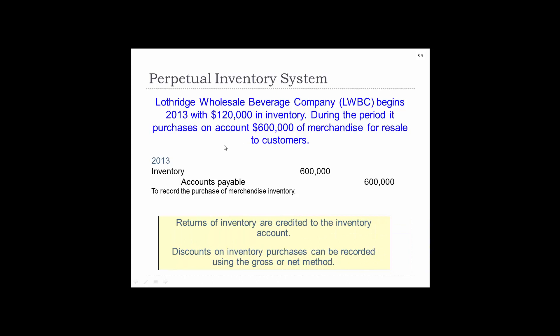Let's go through the perpetual — constantly updated. So Lothridge Wholesale Beverage Company begins 2013 with $120,000 in inventory. During the period, purchases on account of $600,000 of merchandise for resale to its customers. So if this was a perpetual inventory system, we would debit inventory and credit accounts payable.